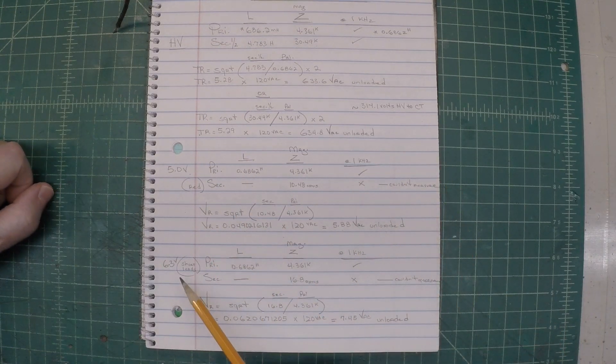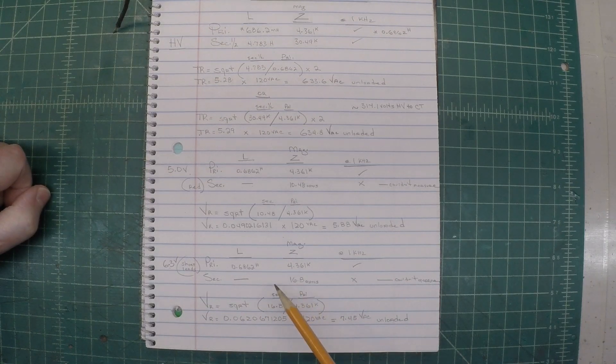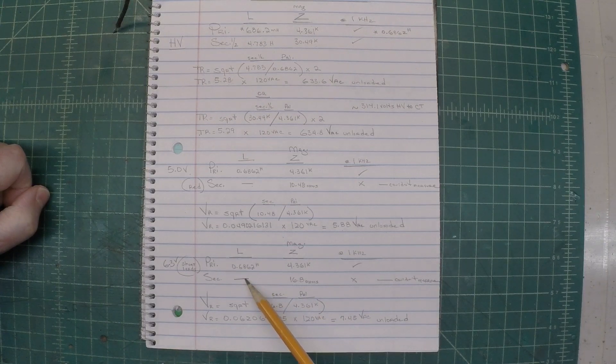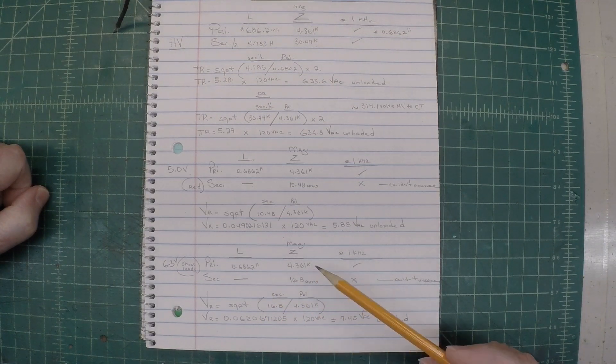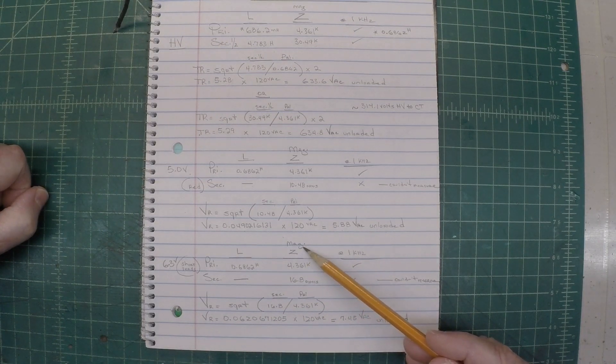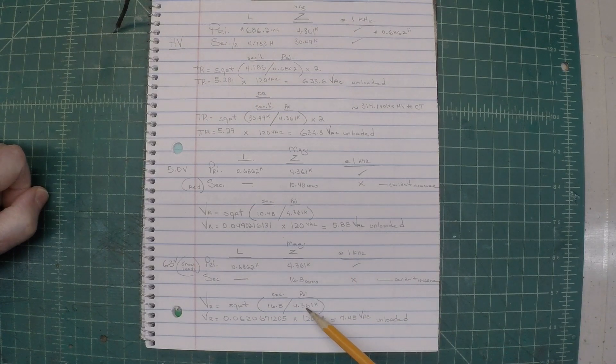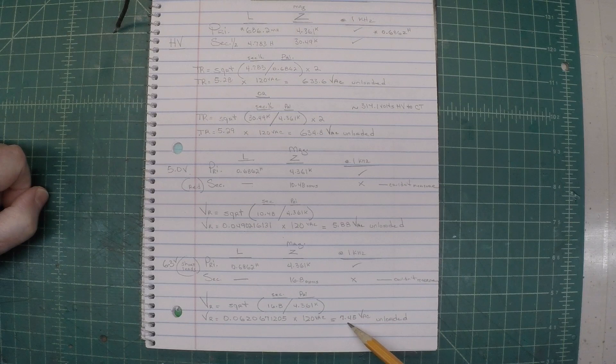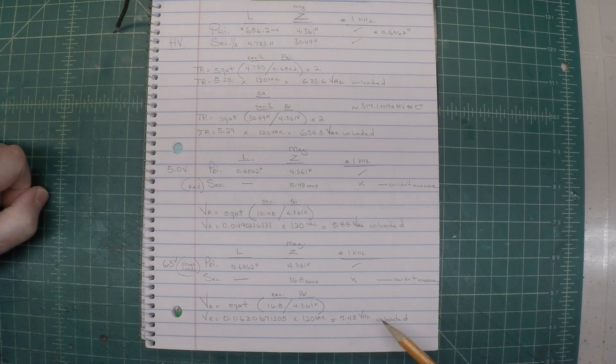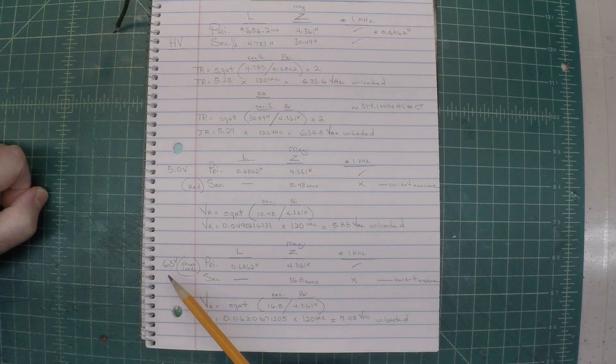And working again for the 6.3 volt, you can see the same method and procedure used. I could not read the inductance at 1 kilohertz on the meter. Leveraging the magnitude Z, the sum of the impedance, you can see the math works out to 7.45 volts unloaded on the 6.3 volt string.